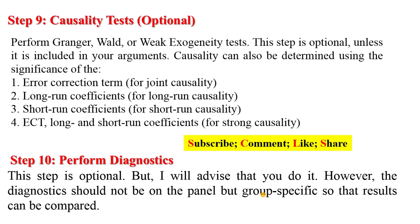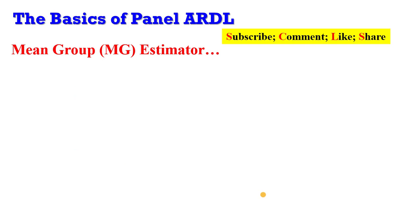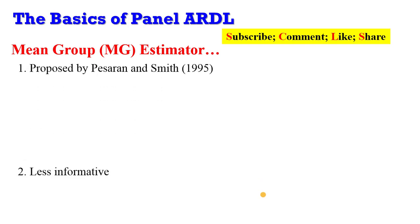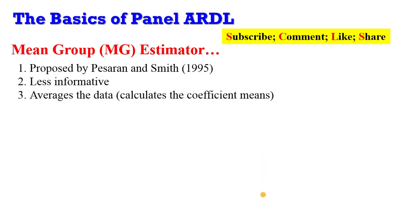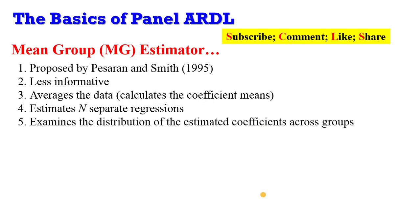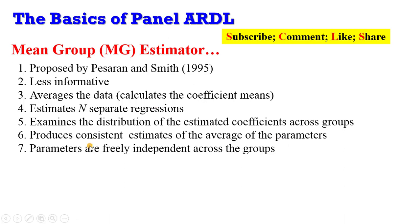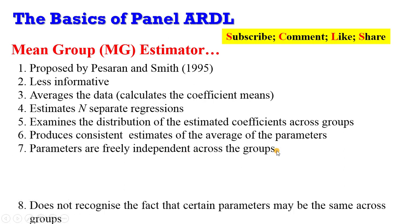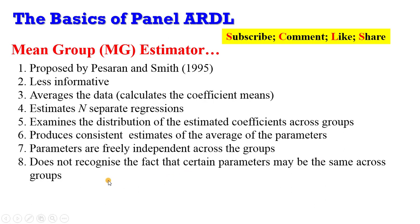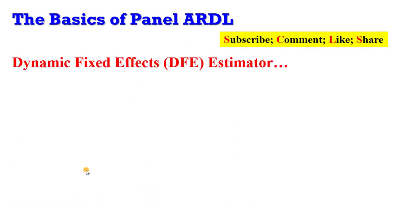The Mean Group (MG) estimator, proposed by Pesaran and Smith (1995), is less informative because it averages the data by calculating coefficient means. It estimates N separate regressions — so for 10 countries it runs 10 regressions — and examines the distribution of estimated coefficients across groups. It produces consistent estimates of the average of the parameters and assumes parameters are freely independent across groups, but does not recognize that certain parameters may be the same across groups.